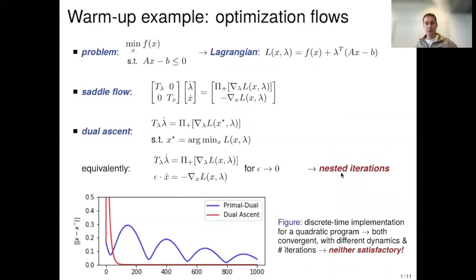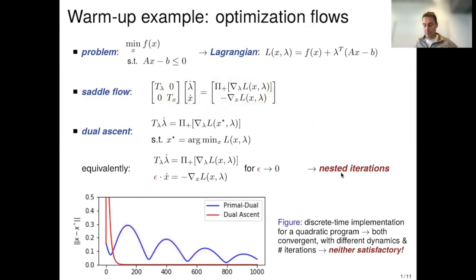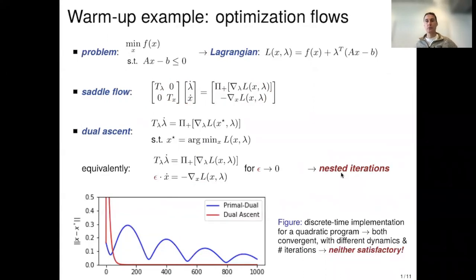Here is a simulation of what this looks like in discrete time. The red curve is the dual ascent, which converges very quickly and performs very nicely. In comparison, the primal-dual flow has quite oscillatory transients and converges much more slowly. What you don't see here, of course, is that you need to run a whole bunch of nested iterations to compute the argmin when running dual ascent. In short, neither of the two methods is really satisfactory, and this is what we want to address today.